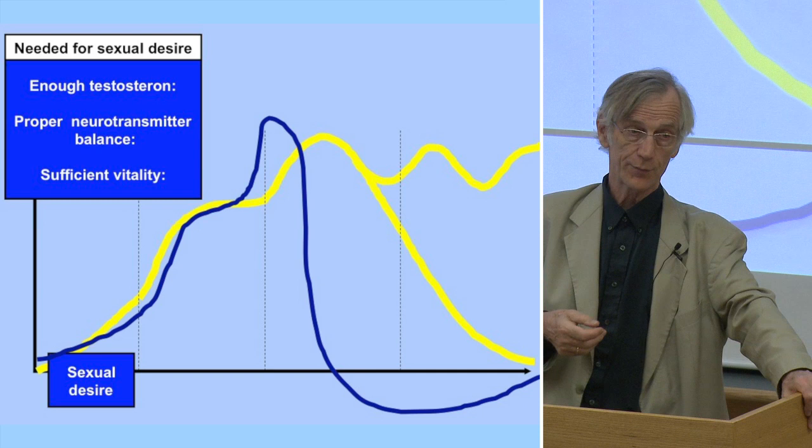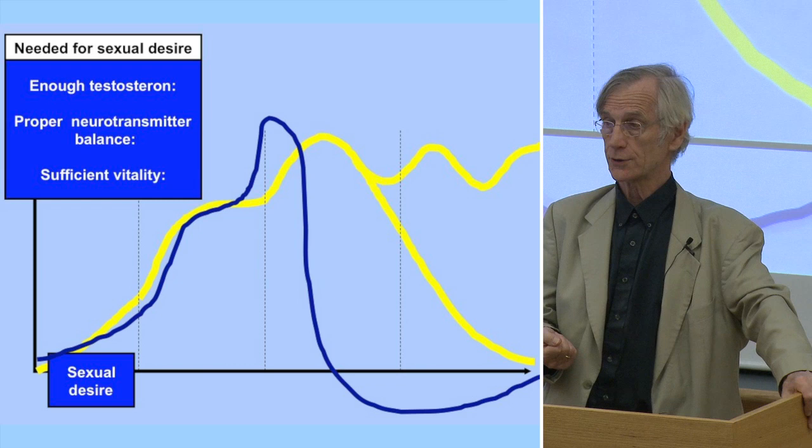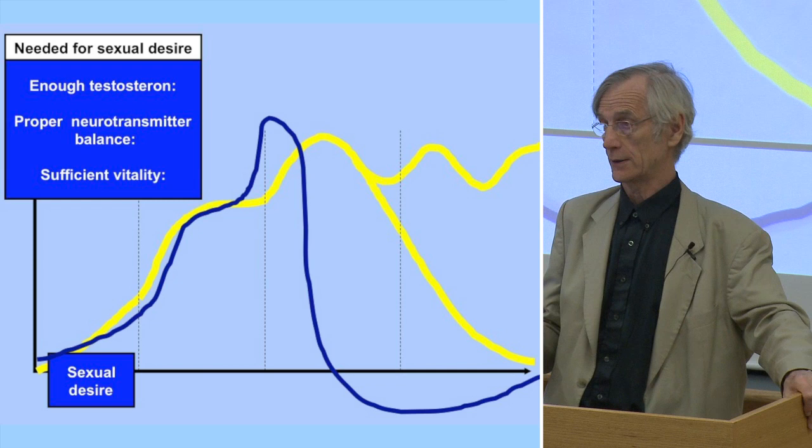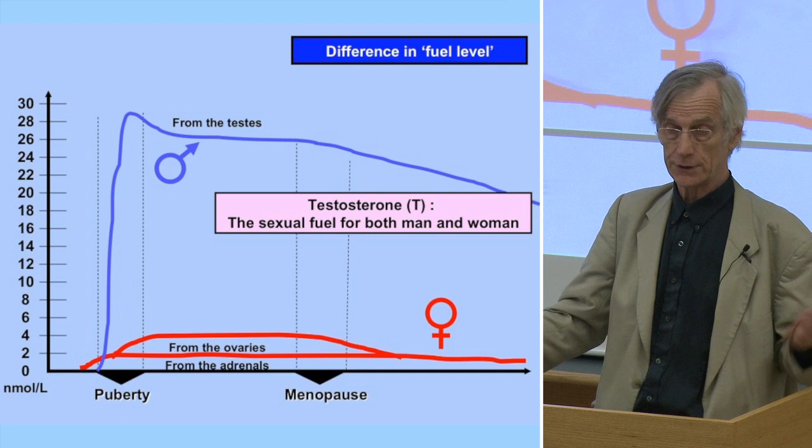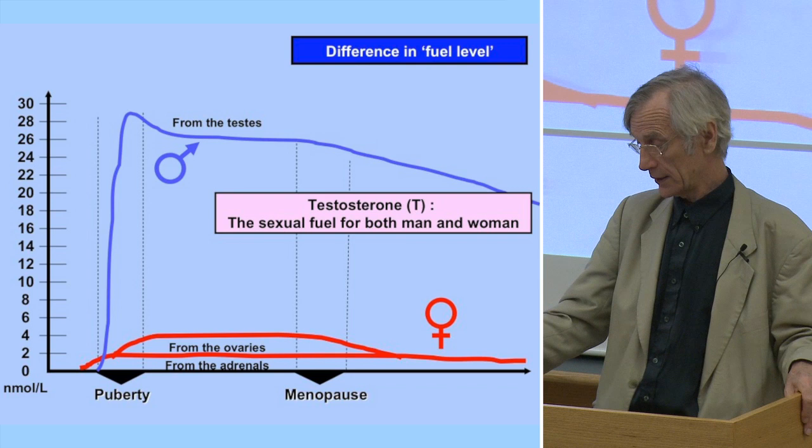Men make testosterone in the testes — 95% — and in the adrenal glands — 5%. Women make testosterone in the ovaries for 50% and in the adrenal glands for 50%. So testosterone is very important for both. You can see the difference in amount, which is of course much higher in men.